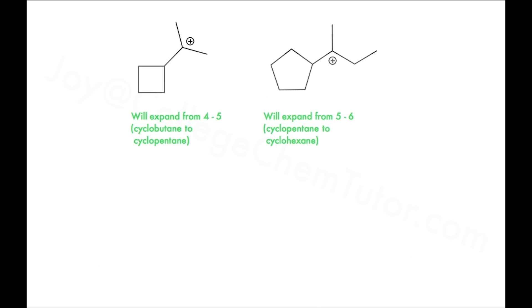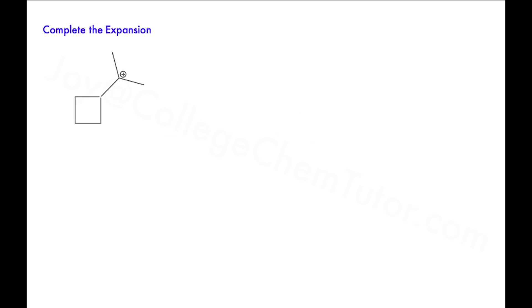Of the two molecules that can expand, we will work out the ring expansion of the cyclobutane in the space below. We begin with the carbocation atom and number one, two, three around the ring as shown.